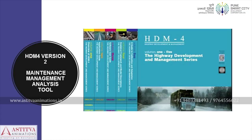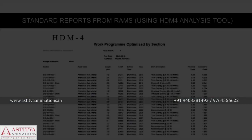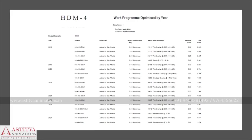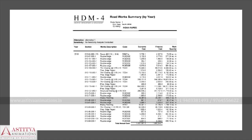HDM4 version 2, developed by the World Bank for developing nations, is used for maintenance management decision making. RAMS data is imported into the HDM4 software and standard reports are generated for work prioritization, needs analysis, and generating short-term and long-term maintenance plans. The reports are exported back to the RAMS portal for viewing.